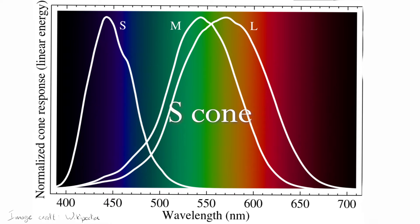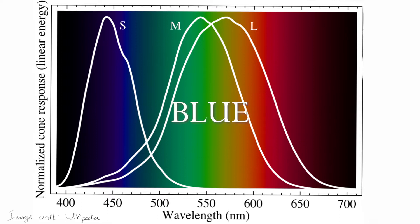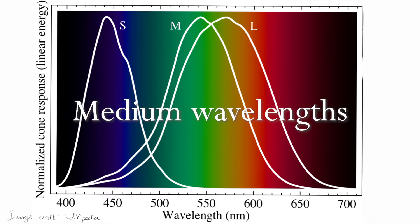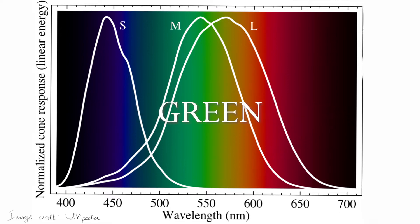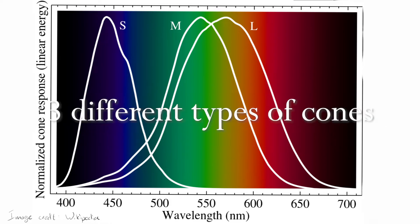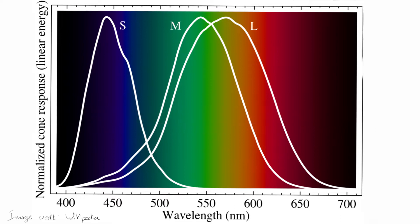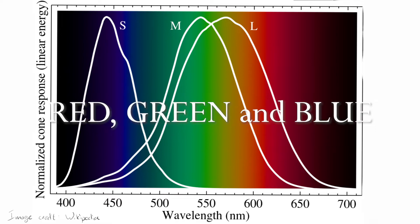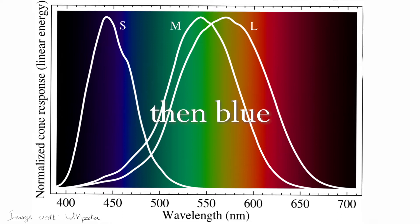The first type is the S cone, which is most sensitive to short wavelengths, or in other words, blue. Then we have the M cones, which are most sensitive to medium wavelengths, or simply green. Finally, we have the L cones, or long wavelength cones, which are most sensitive to red. However, notice how there is a lot of overlap between the M cones and the L cones. Essentially, we have three different types of cones each perceiving primarily red, green and blue — but mainly green, then red, and then blue.